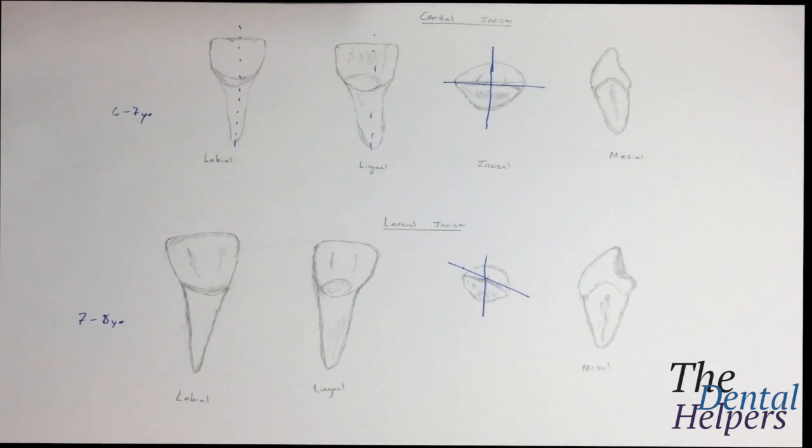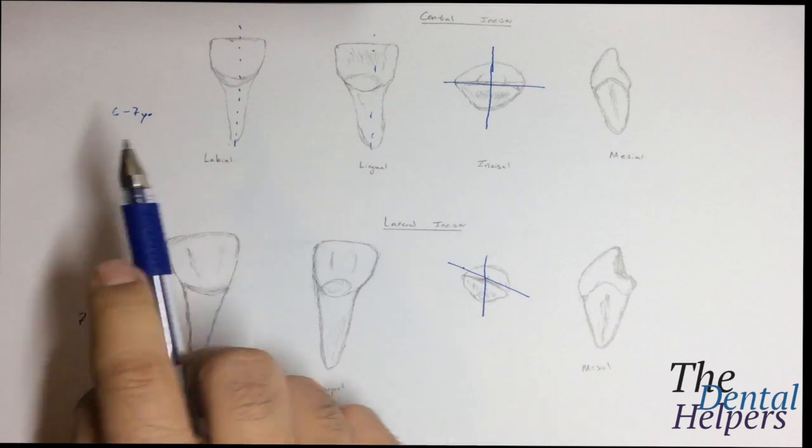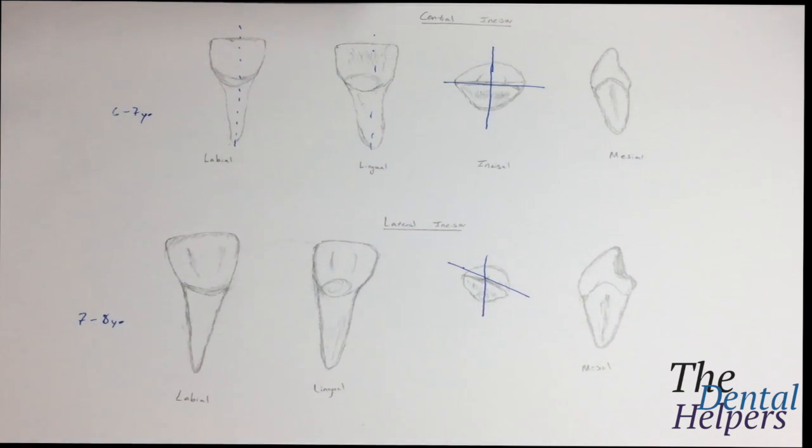Depending on your professor, they're probably not going to ask you to distinguish between 24 and 25, so I wouldn't worry too much about that. But there are some features that you should know regarding the mandibular central incisors.